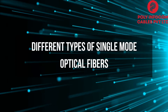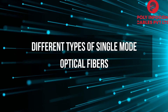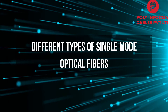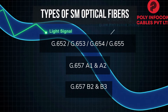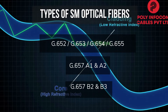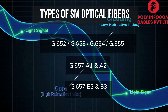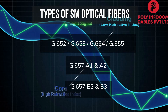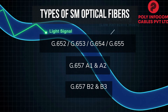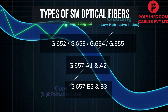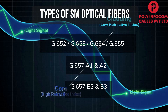Welcome to the introduction of different types of single-mode optical fibers. Single-mode optical fibers are categorized based on their geometrical and transmissive properties. The categories are as follows: G652, G653, G654, G655, and G657 fibers.